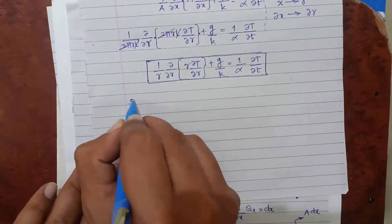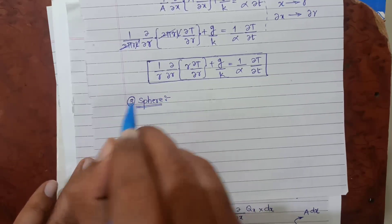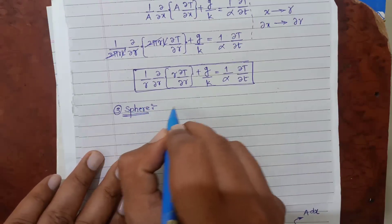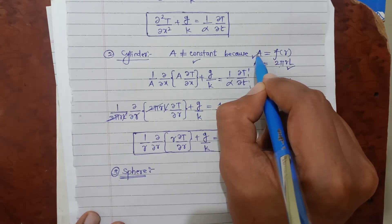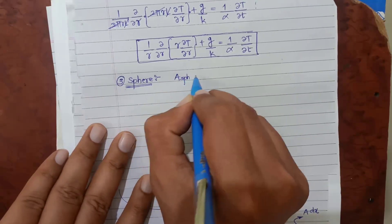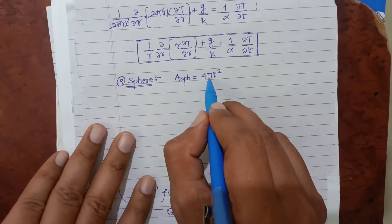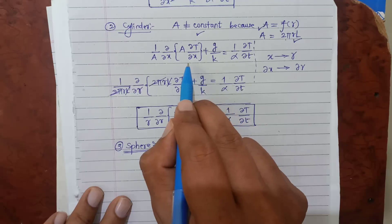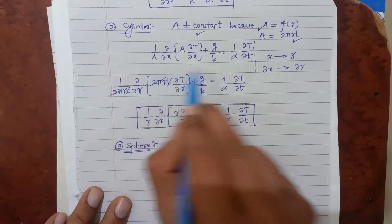The third geometry is a sphere. The same philosophy applies: area is not constant and is a function of radius. The formula for area is different — area of a sphere equals 4πr². Here r is the variable and 4 and π are constants. The basic heat conduction equation is: 1/A · ∂/∂x(A · ∂T/∂x) + g/k = 1/α · ∂T/∂t. In case of a sphere, the directional coordinate also migrates from x to r because in any direction you move, you are moving in the radial direction only.